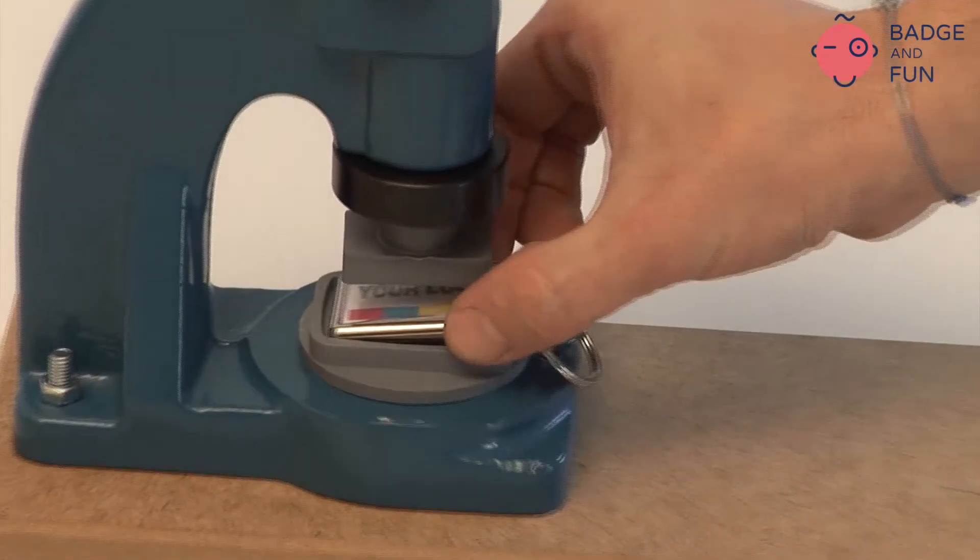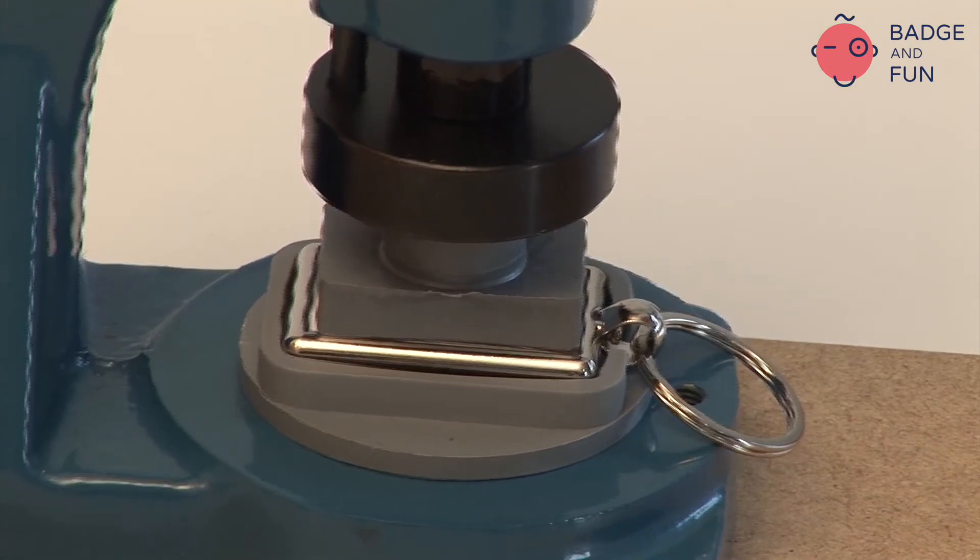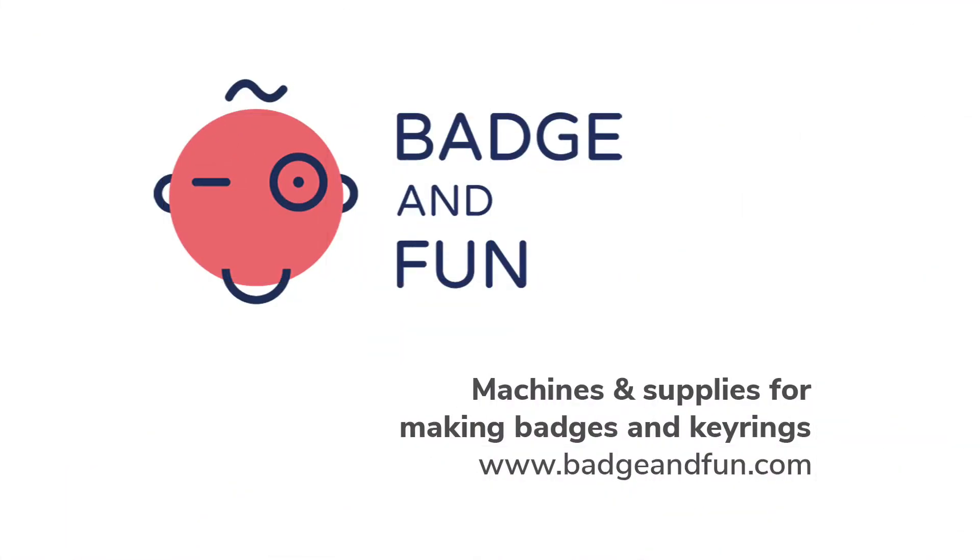For assembling acrylic products, we will only use the machine for cutting out the paper. But the assembling is totally done by hand, pressing with the fingers the cover inside the keyring body.